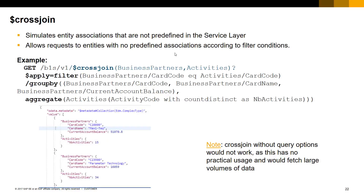The service layer provides predefined associations between different entities in the metadata document. But if you require entity associations not defined by the service layer, you can use $crossjoin to simulate associations. The $crossjoin option allows requests to entity sets that have no predefined associations according to the supplied filter conditions. In the provided example, crossjoin is used to generate a result response containing two entities — business partners and activities — where the filter defines the relationship: BusinessPartners/CardCode equal to Activities/CardCode.